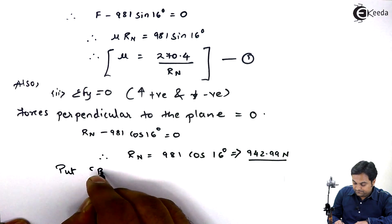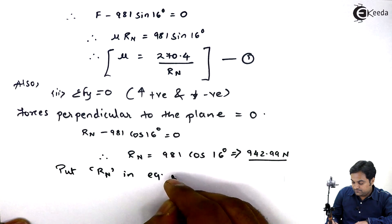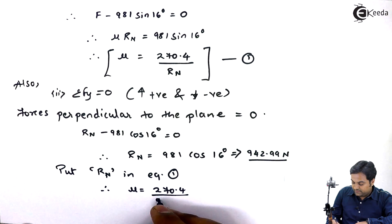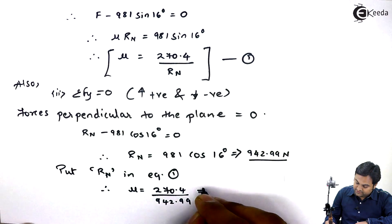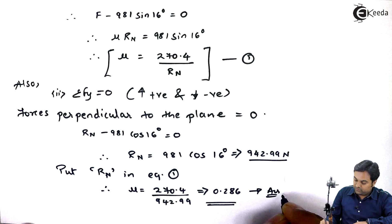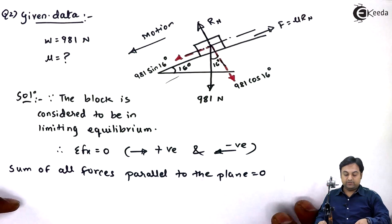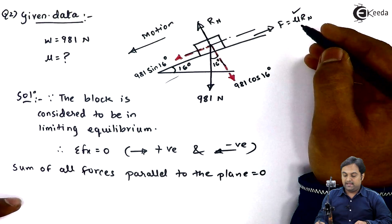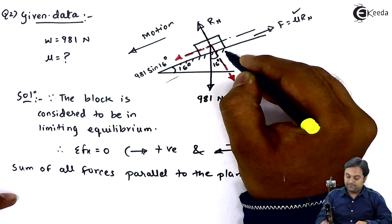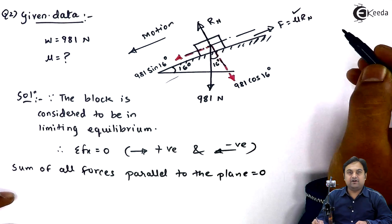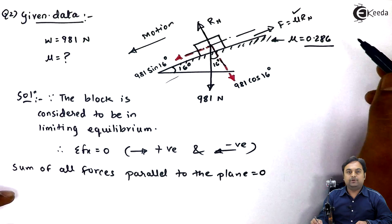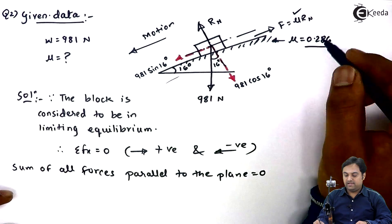Substituting Rn into equation one: μ equals 270.4 divided by 942.99. Hence, μ equals 0.286. This is the answer. The coefficient of friction between the block surface and the inclined plane is 0.286. The μ value will always be less than 1, and we have completed the question.